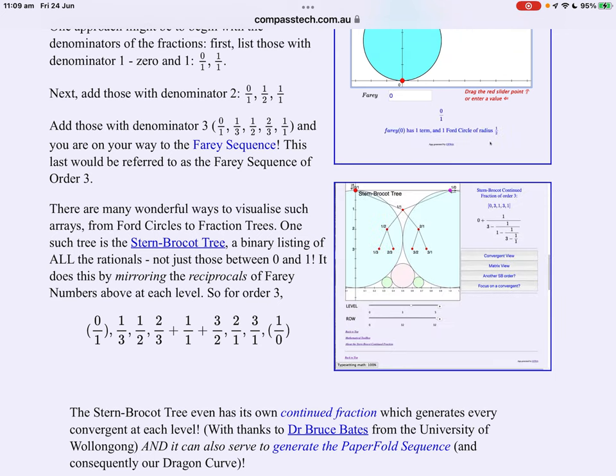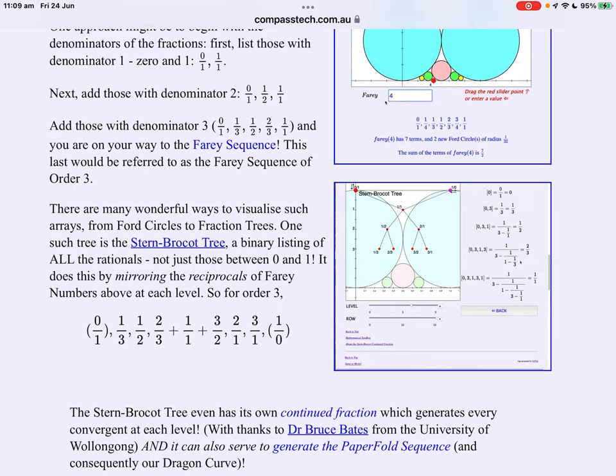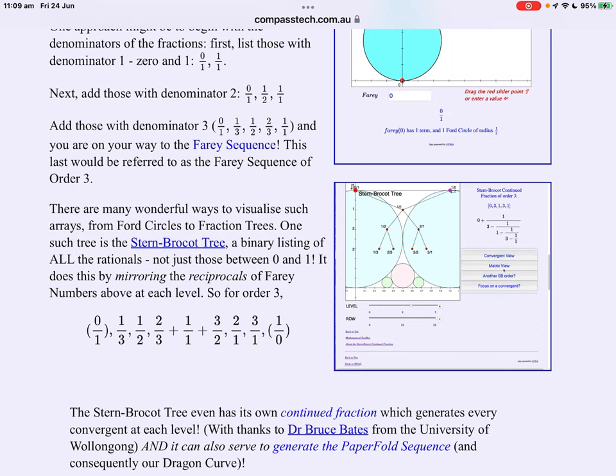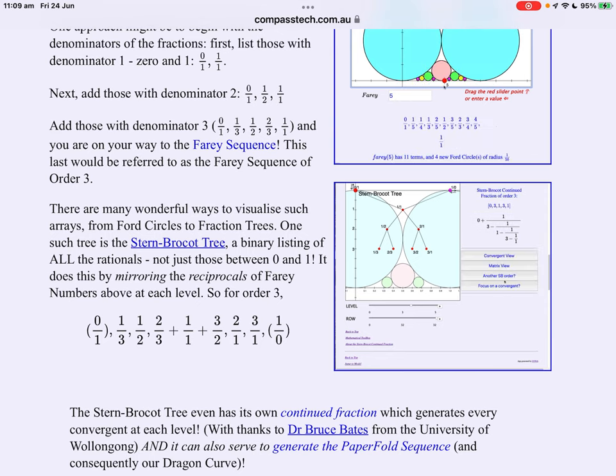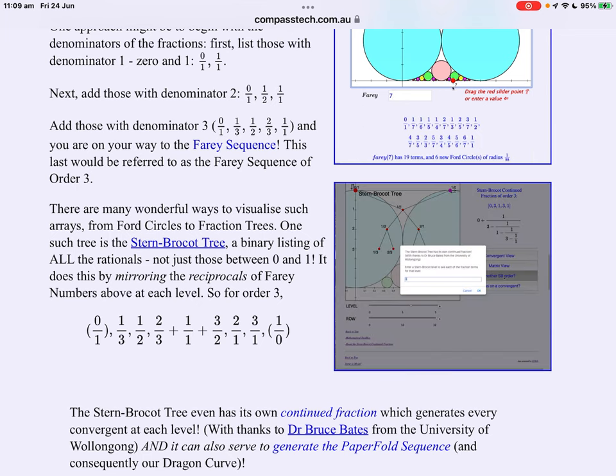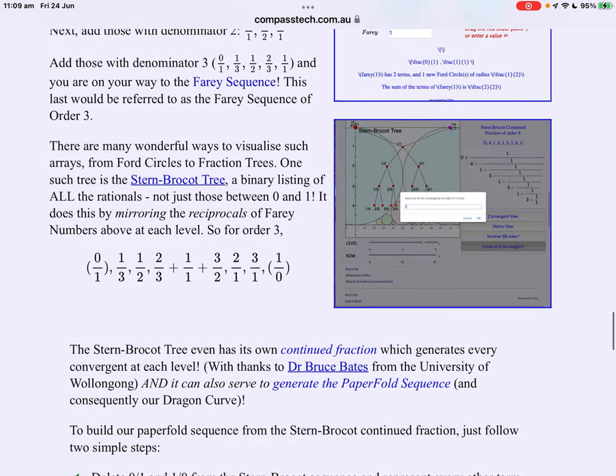So where Farey gave us one-third one-half and two-thirds with one in the middle, Stern-Brocot takes that and reverses them and turns them upside down. Two-thirds becomes three on two, a half becomes two on one and a third becomes three. Now in this way the Stern-Brocot tree goes from all rationals between zero and one to all rationals so it's a way to actually list and display every rational number which is very cool.